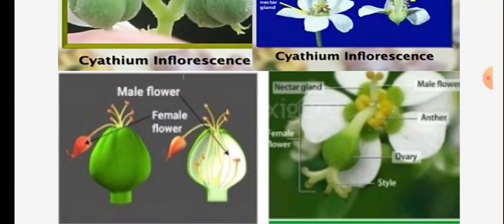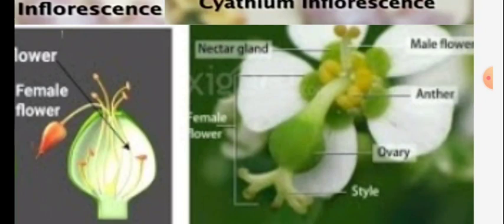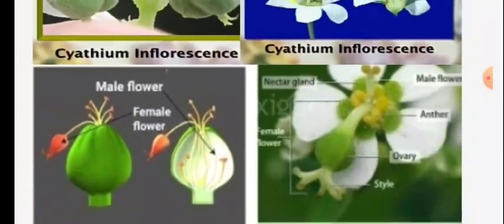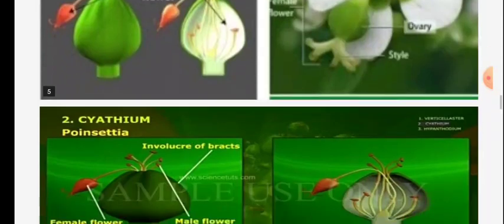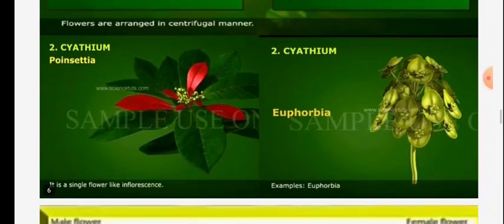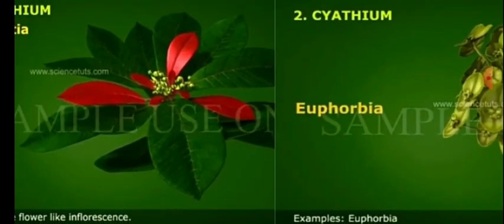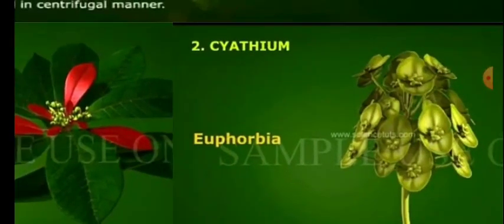The nectar is present — see the position of the male flowers, then the position of the style. The styles are at the top and the stigma is at the base. In Cyathium, the large green involucre is present. Poinsettia, that is Euphorbia pulcherrima, shows colored bracts — these are commonly seen conditions.